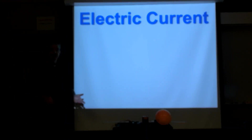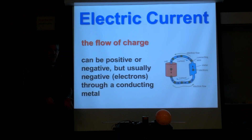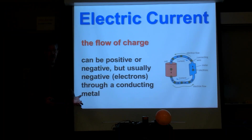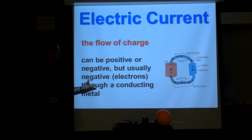Our next term is electric current. Current is the flow of charge. Charge flow could be positive or negative, but when we're talking about wires and solid devices, it's usually the electrons that do the moving — the protons are not moving. It is possible to have a liquid solution with positive ions flowing and creating the current, but in our wires it's always going to be the electrons.